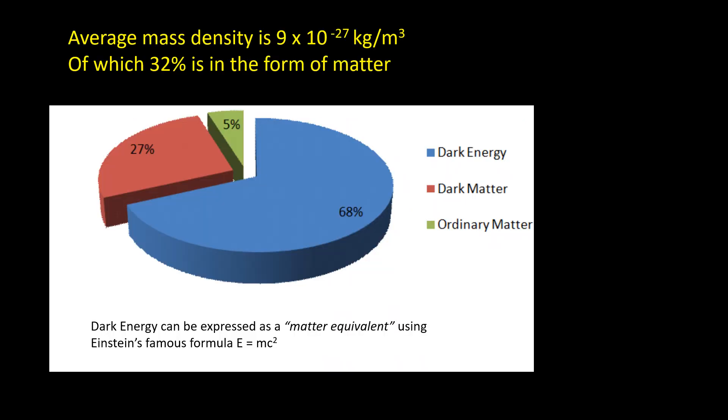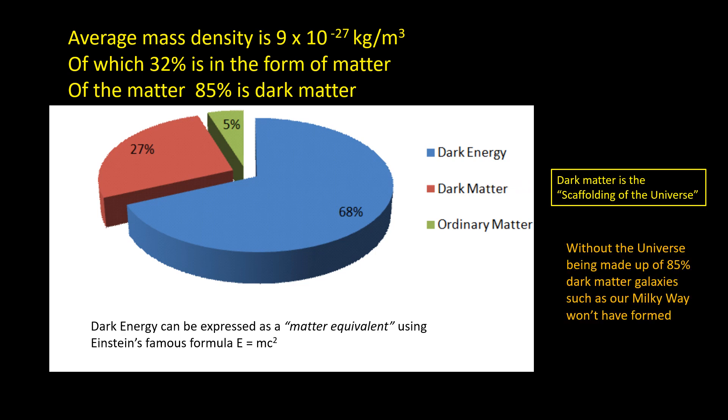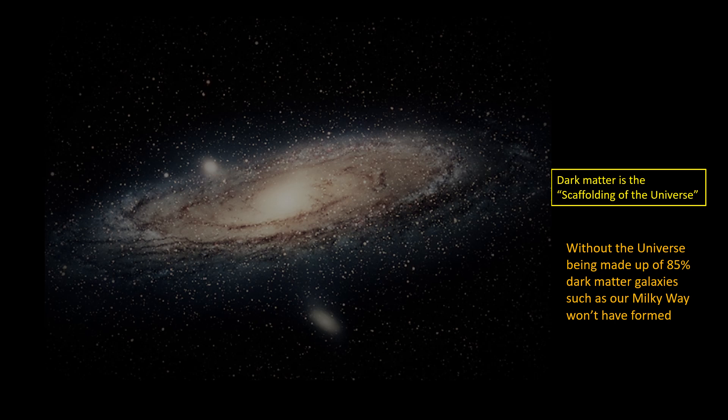Most of the matter in the universe is in the form of dark energy. The remainder, 32%, is in the form of matter, and most of this matter is in the form of dark matter. Dark matter is the scaffolding of the universe. The visible matter, out of which all objects that we can see—planets, stars, galaxies—collected inside this scaffolding and eventually formed the stars and galaxies we see today.